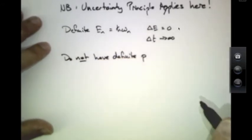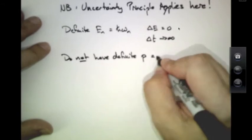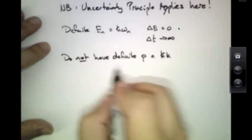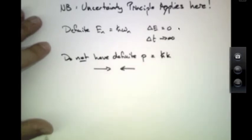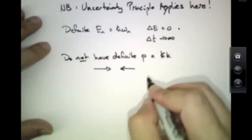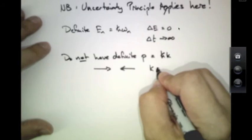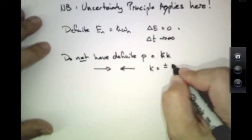However, we don't have a definite momentum p or h-bar k, and that's because we have a superposition of two traveling waves to make a standing wave. Both have the same frequency omega, but one is opposite sign to the other.